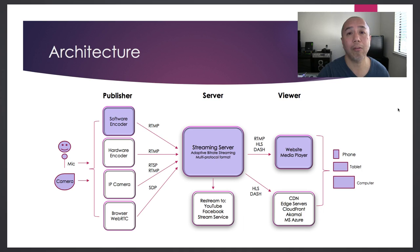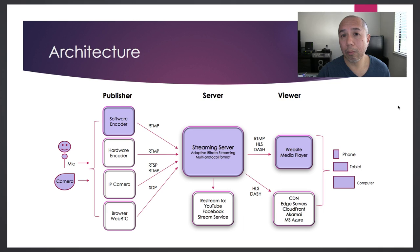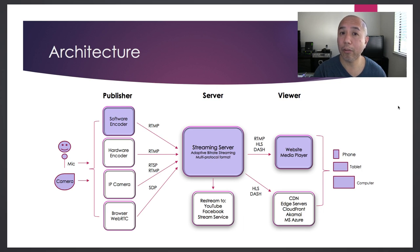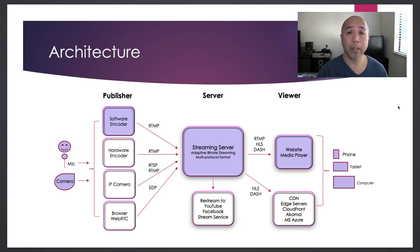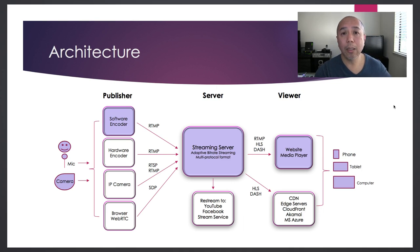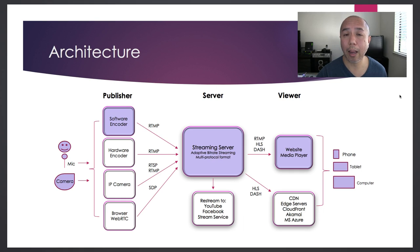On the viewing side, viewers need some kind of media player. Service providers like YouTube and Facebook have players embedded on their pages, but you can also embed a player on your own website. In the case of Wowza, you can use a media player such as JW Player, embed it into your website, and configure it to talk to your streaming server.